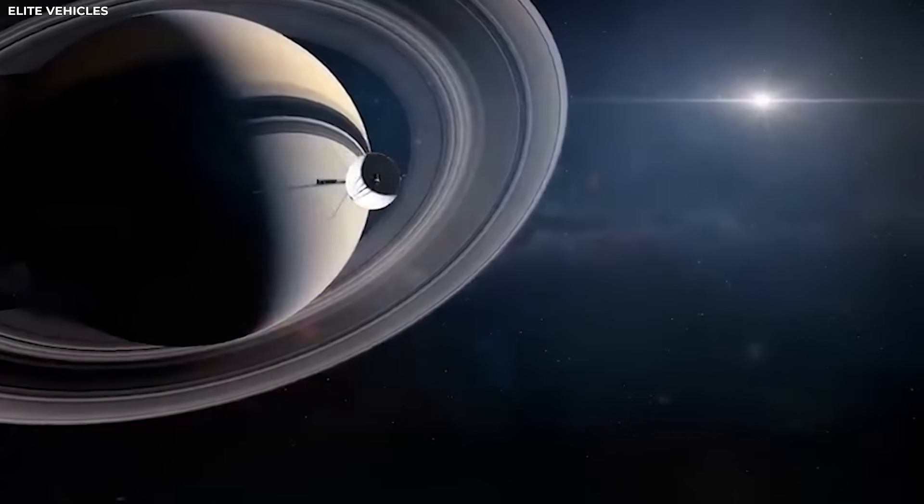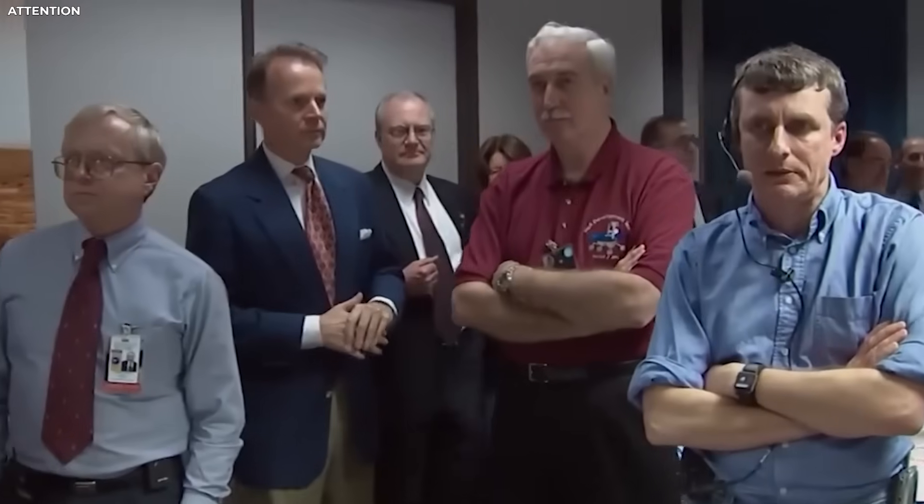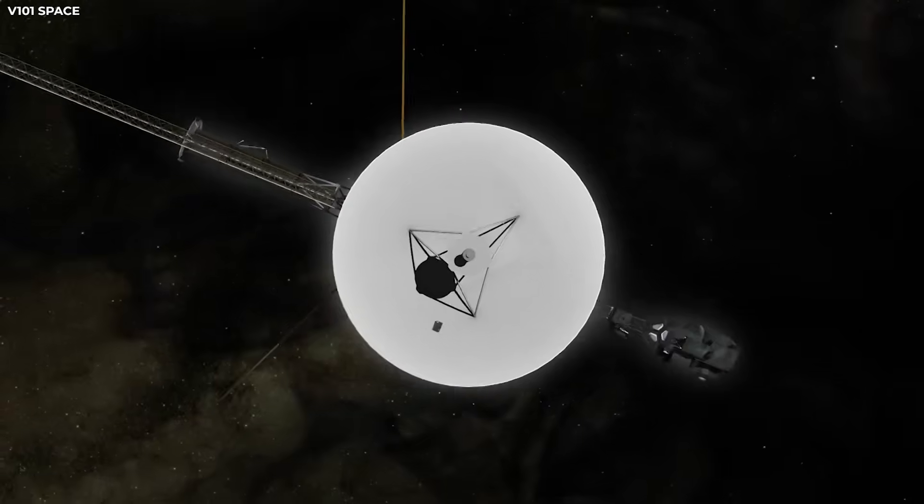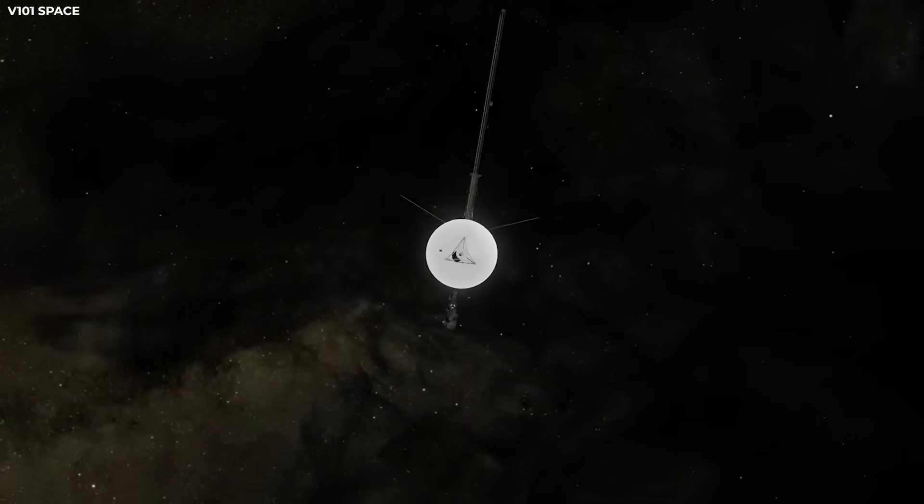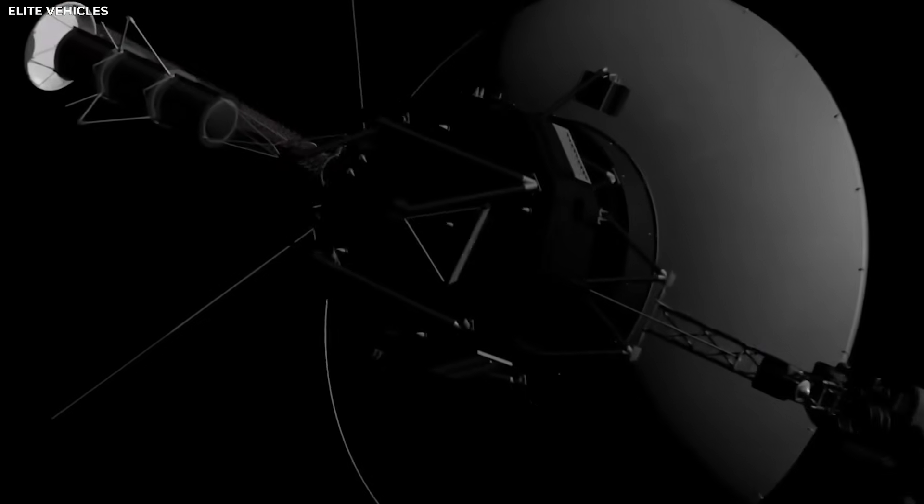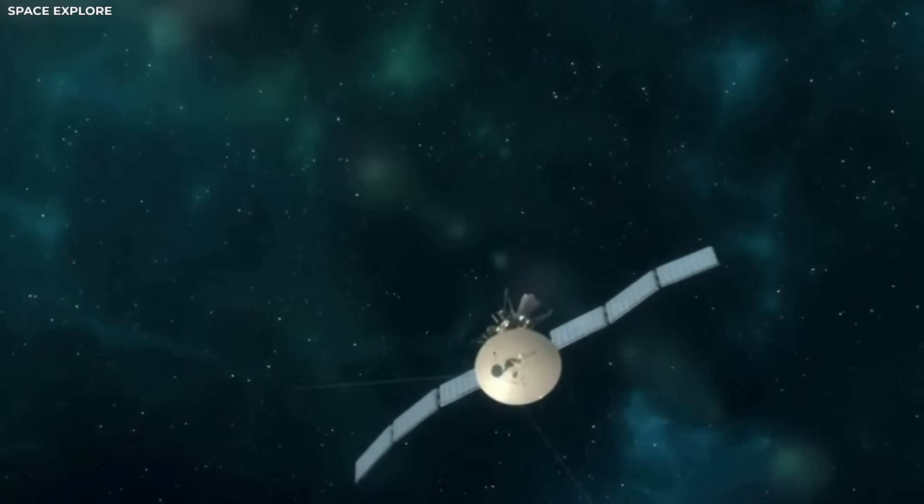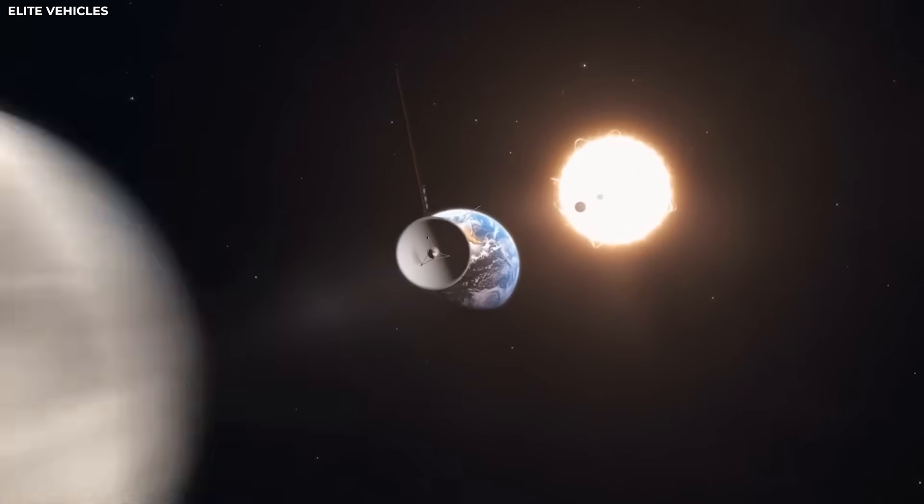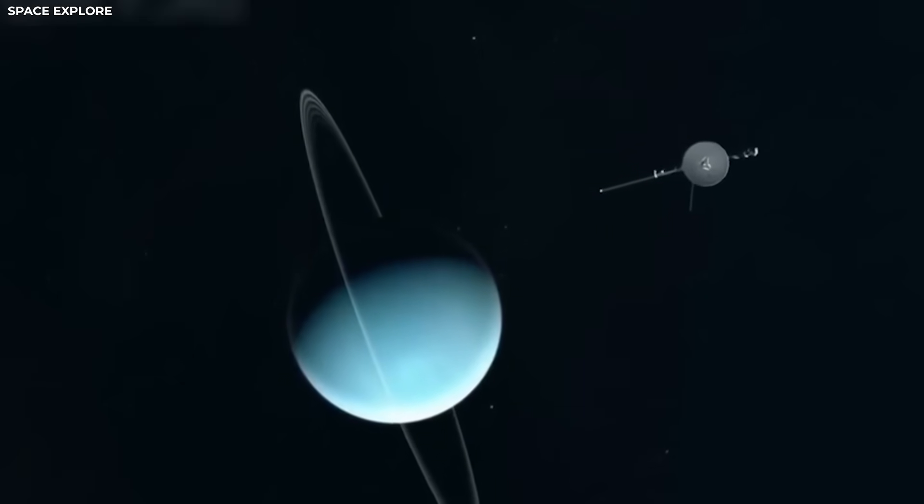What if I told you a 47-year-old spacecraft just sent a signal that's freaking out scientists across the globe? Voyager 2, drifting quietly over 12 billion miles away, suddenly broke the silence with a strange transmission. No warning, no explanation, just a mysterious rhythmic pulse buried in static like something or someone is trying to talk. And trust me, this isn't part of the plan.